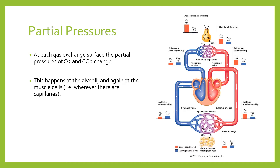The final key point before we look at the diagram: the bigger the diffusion gradient — that is, the bigger the difference between the partial pressure of a gas in one location versus the location next to it — the faster that gas will flow across that membrane to try and equalise things. So if we have a really big difference between the partial pressure of oxygen in the alveoli and in the capillaries around the alveoli, that oxygen will flow into the capillaries much faster.